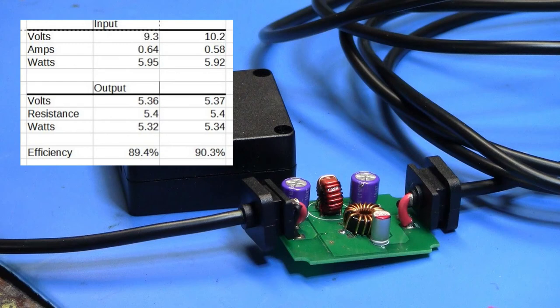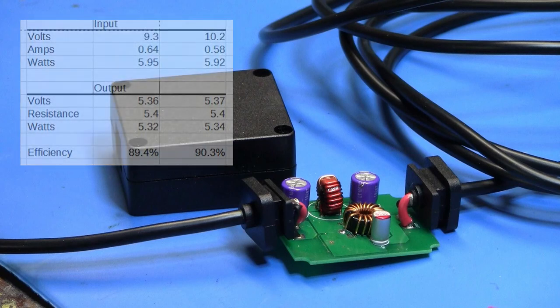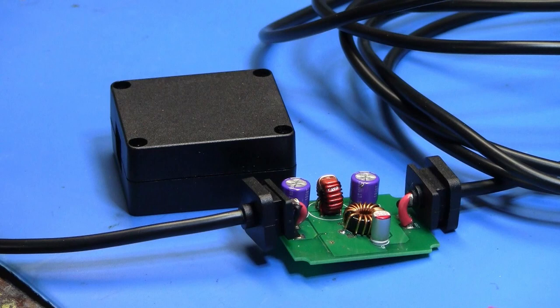Now, with another trial, we had an input of 10.2 volts, 0.58 amps, which calculates to 5.92 watts on the input. And then on the output, we had 5.37 volts, again 5.4 ohms. V squared divided by R equals 5.34 watts. So that turns out to be an efficiency of 90.3%. So just as a round number, let's say this little DC to DC converter is about 90% efficient, which makes sense relative to the fact that I couldn't feel any temperature rise on it with my finger.